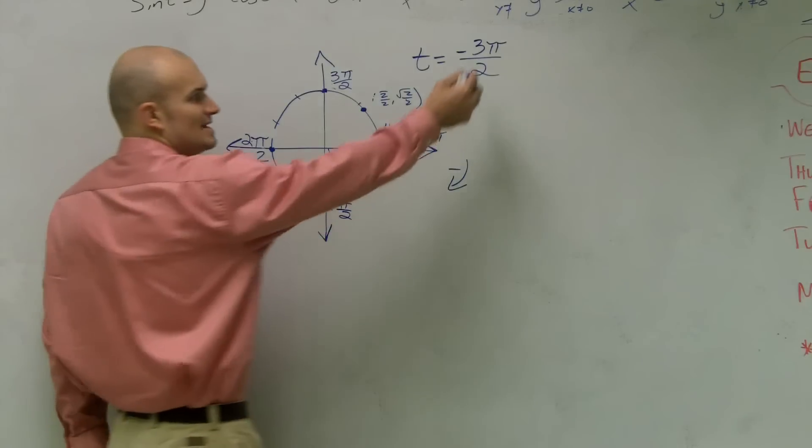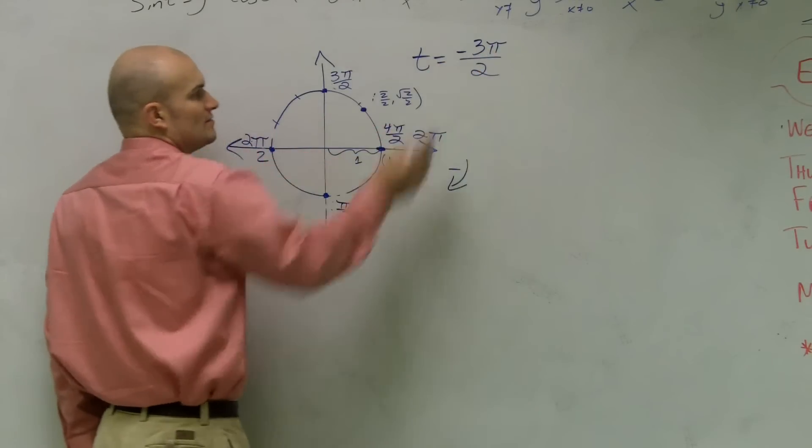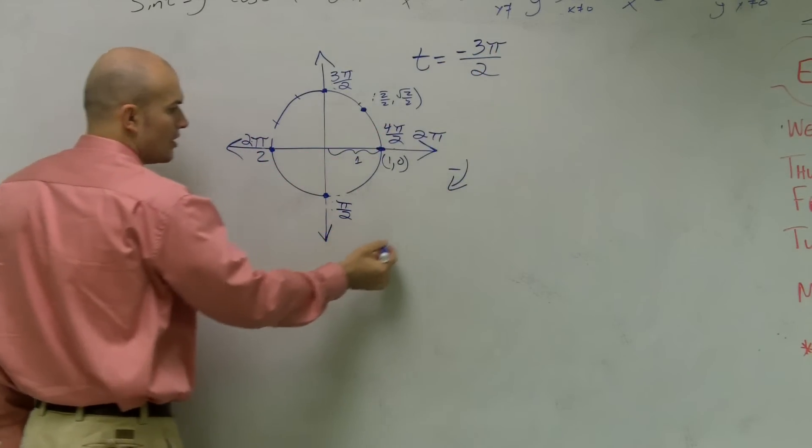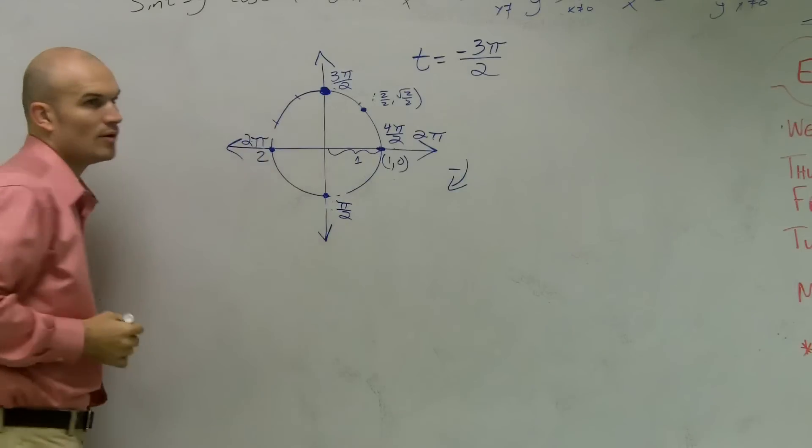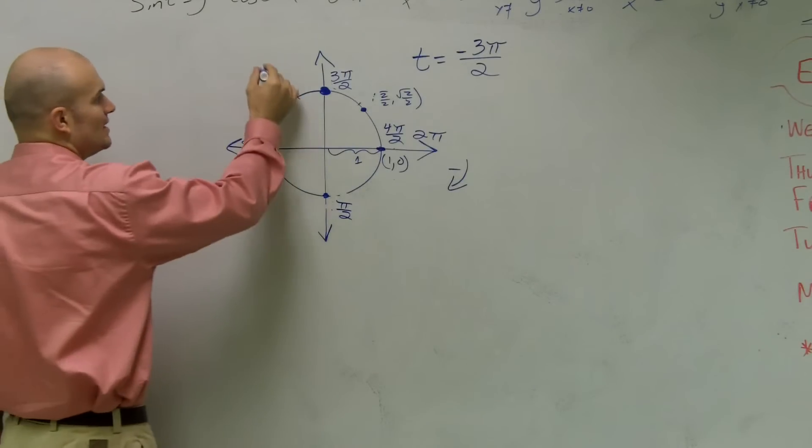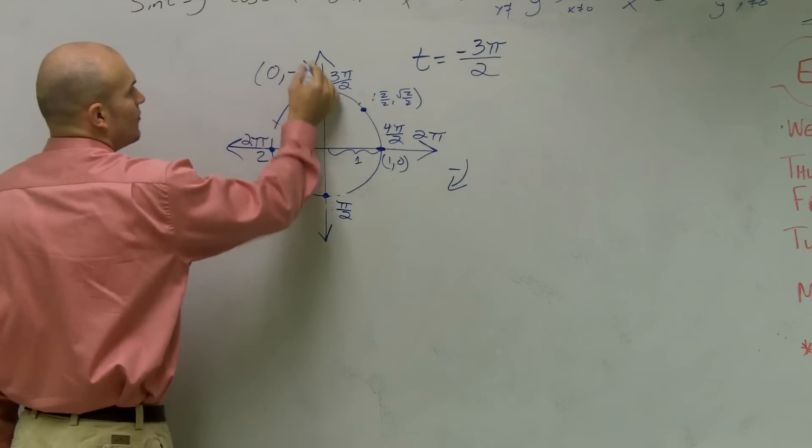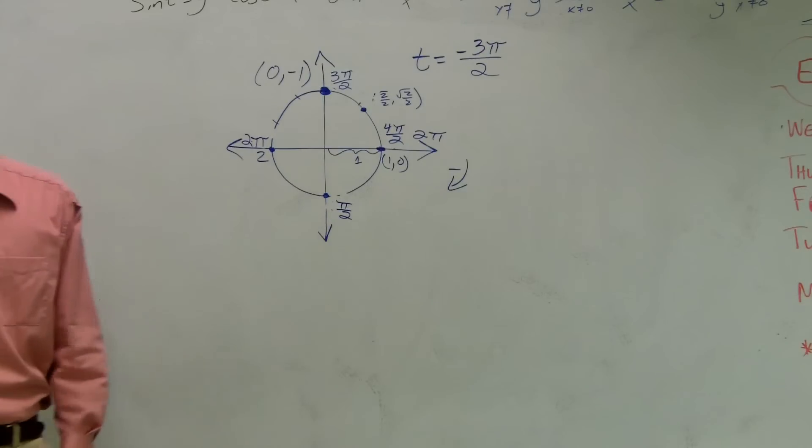So if I say, where is negative 3 pi over 2? Negative just tells us the direction. So I'm going to go all the way around. Boom. There's my coordinate point. So t is the coordinate point of 0, comma, negative 1.